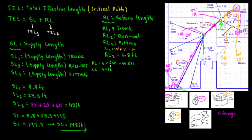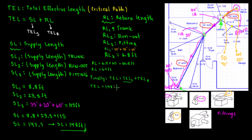Now that we have both lengths, the TEL — Total Effective Length — is equal to TEL of the supply side plus TEL of the return side. The supply side was 148 feet plus the return side was 67 feet, giving us a total TEL of 215 feet.